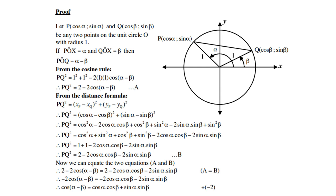From the distance formula, you find the distance of PQ. That will be (xP minus xQ)² plus (yP minus yQ)². Then substituting: (cos α minus cos β)² plus (sin α minus sin β)². Expand the brackets, collect like terms, and apply your identities — for instance, cos²α plus sin²α equals 1. Then you get PQ² equals 2 minus 2cos α cos β minus 2sin α sin β. Call this equation B.